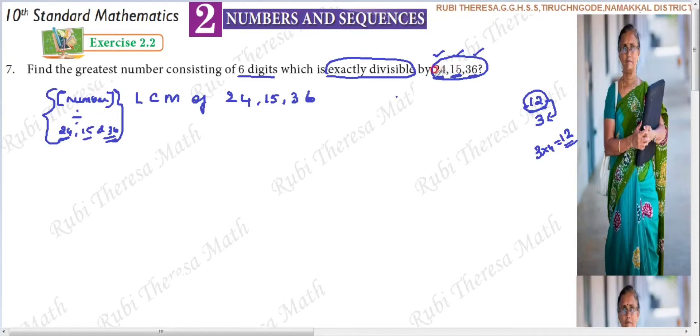Since we have given 3 numbers as the divisors, the number we are looking for must be a common multiple of those 3 numbers. So we have to find the LCM of 24, 15, and 36.